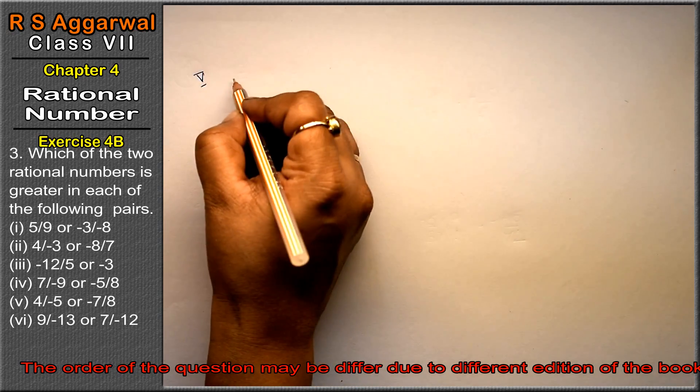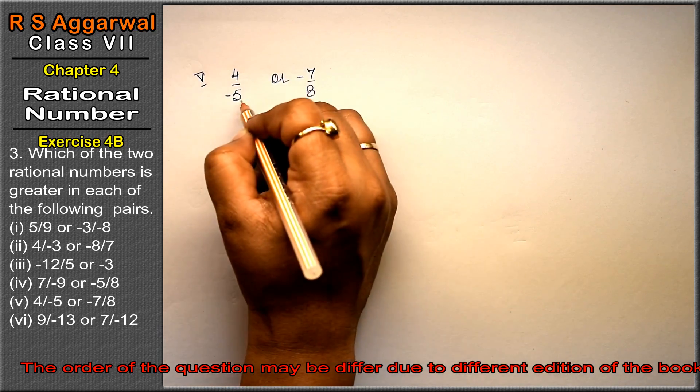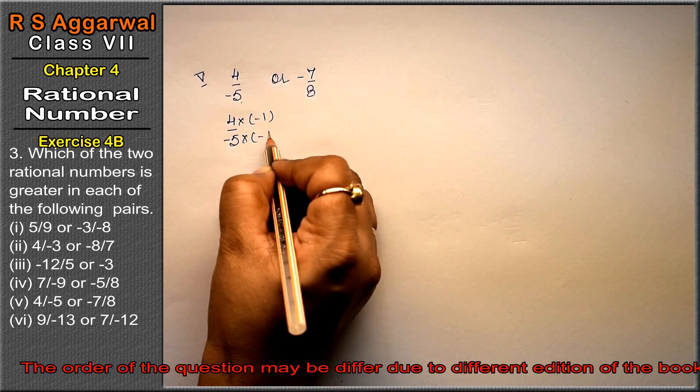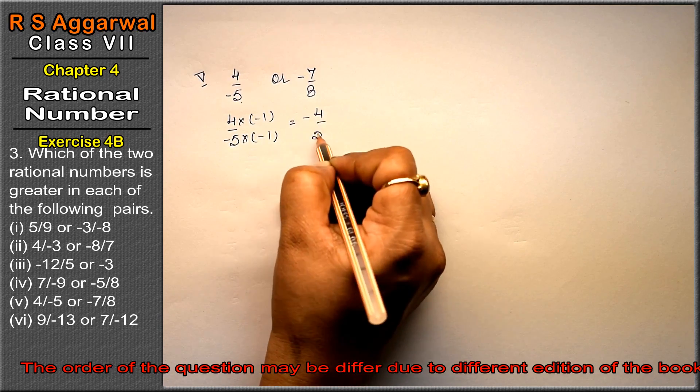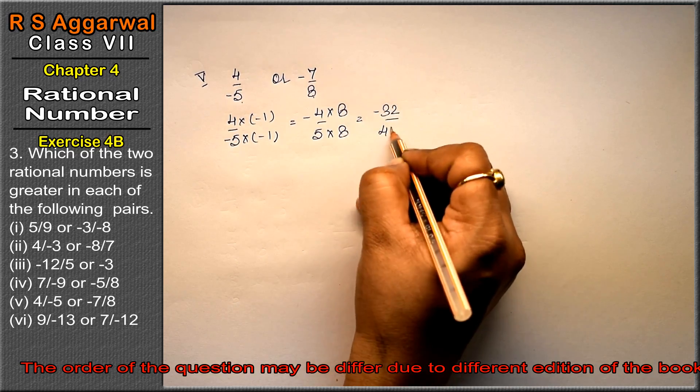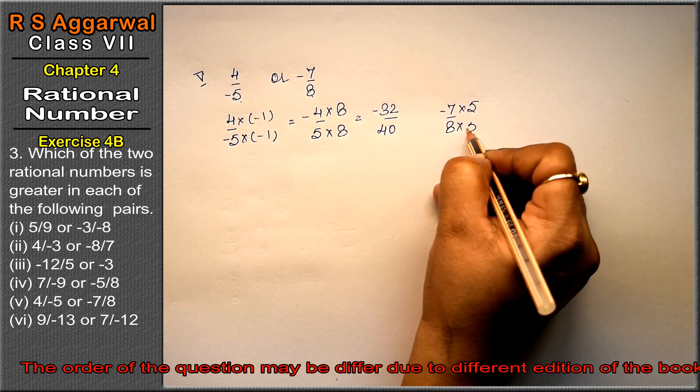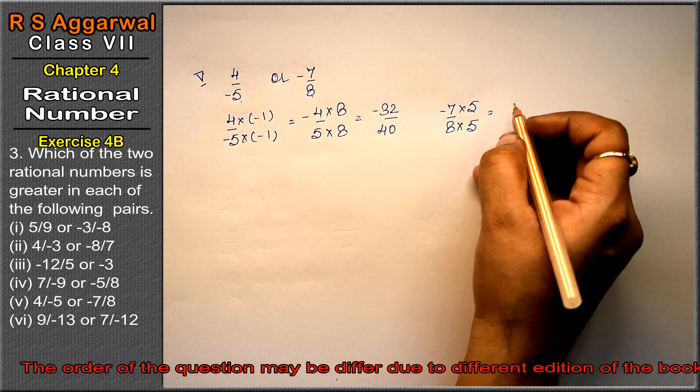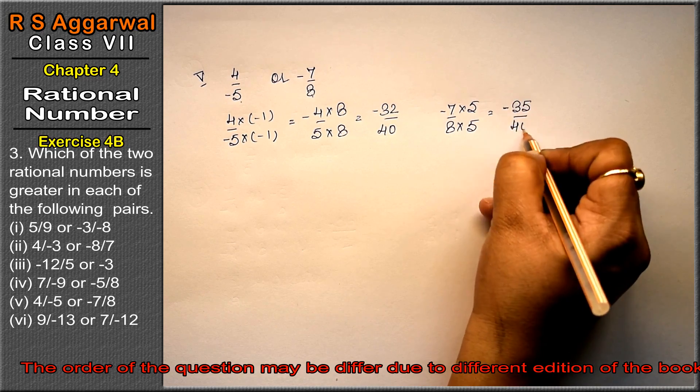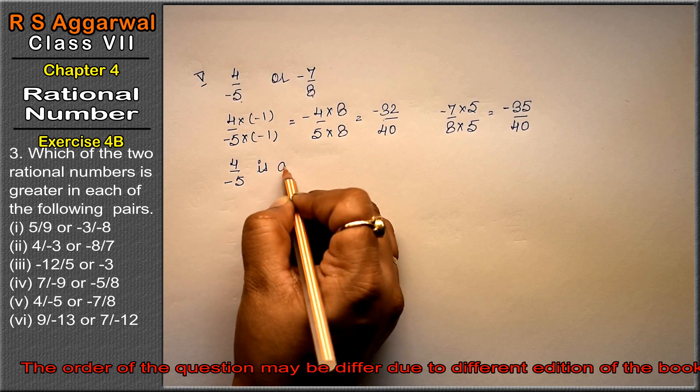Fifth part is 4/-5 or -7/8. First solve 4/-5 by multiplying by -1 to get -4/5. Multiply by 8 to get -32/40. Multiply -7/8 by 5: 7 times 5 is 35, so -35/40. The smaller digit is greater in negatives, so 4/-5 is greater.